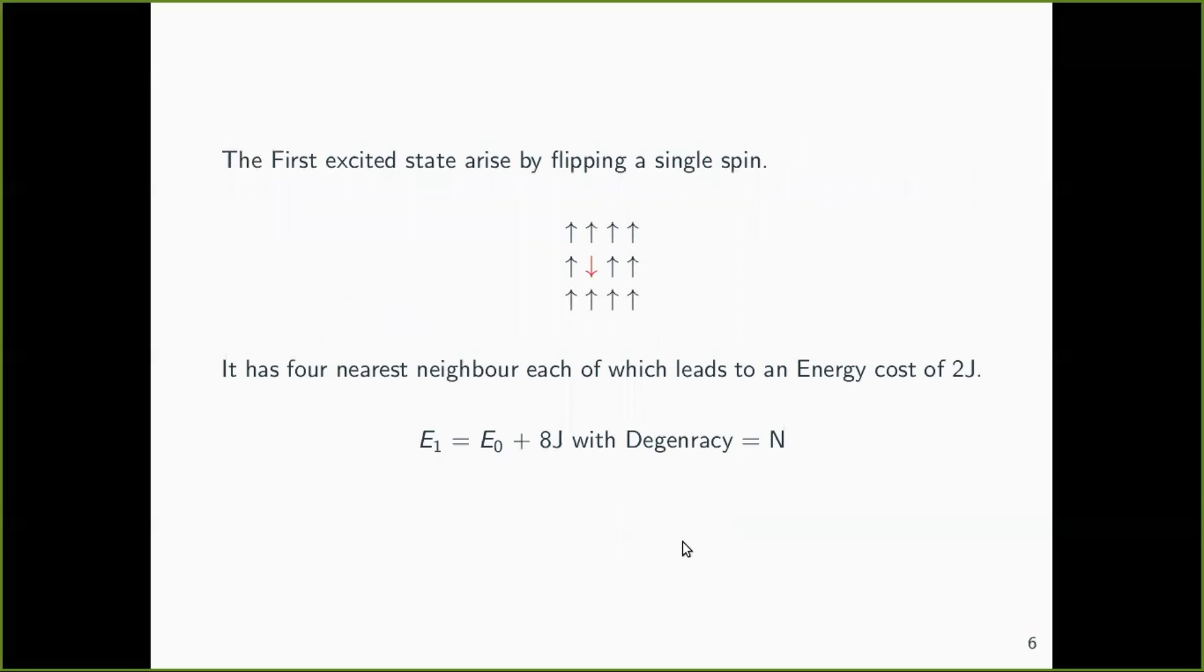Now the next excited state will be when one spin is down that I have marked in red here. So this is when one spin is down.